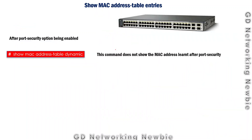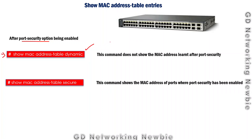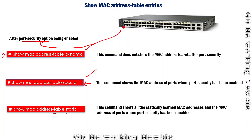For completeness, just these three commands — if you want to see the MAC table entries of the switch, we can use the standard show MAC command. However, once port security has been enabled, this command will not show the MAC addresses configured through the port security option. To see those, we use a different command which will display all statically learned MAC addresses as well as the MAC addresses of ports where port security has been enabled.